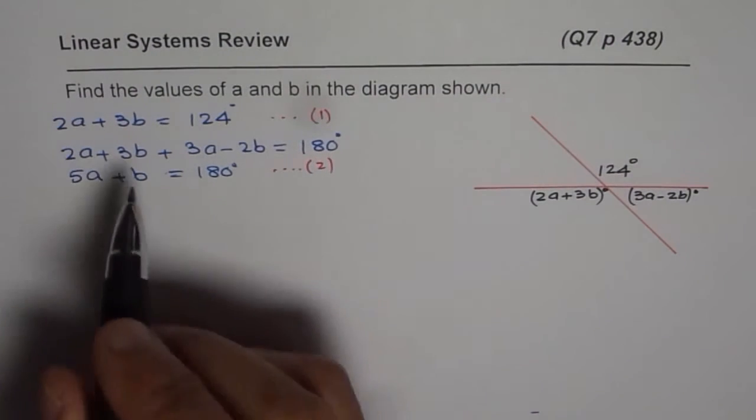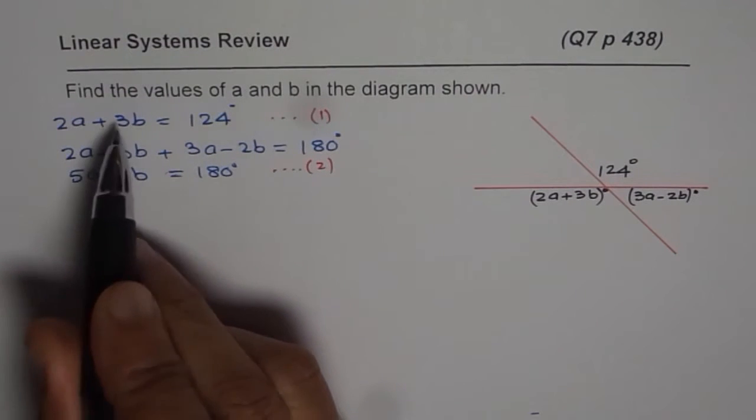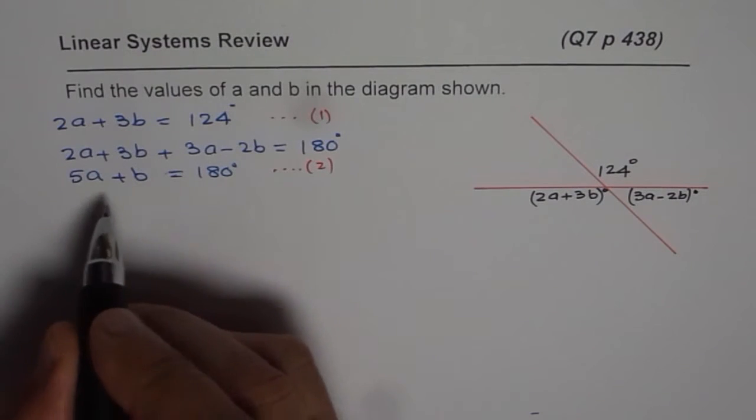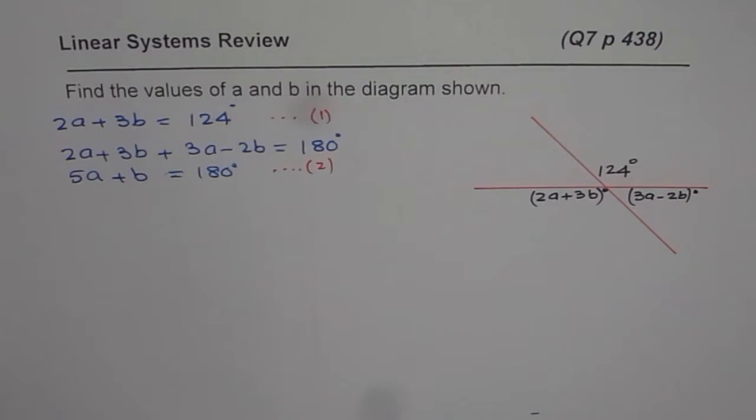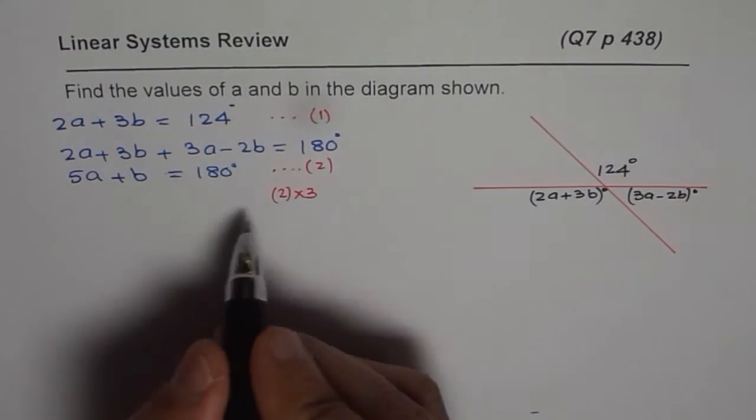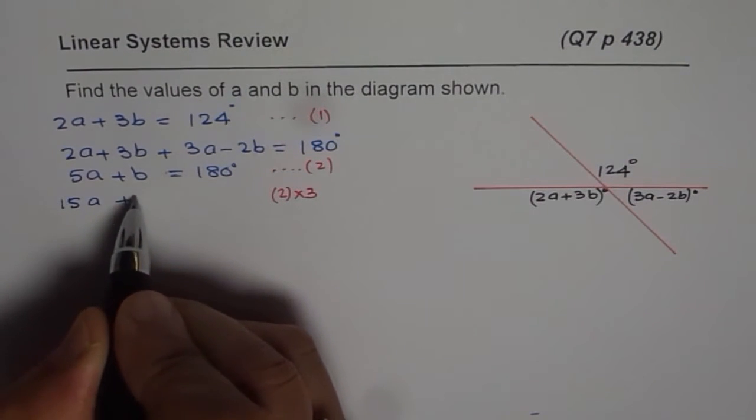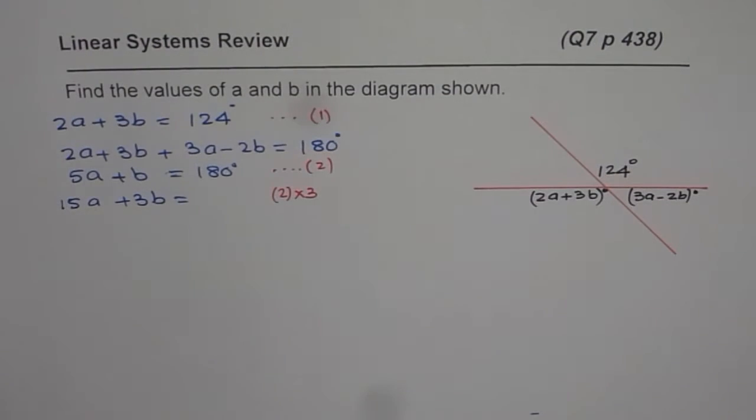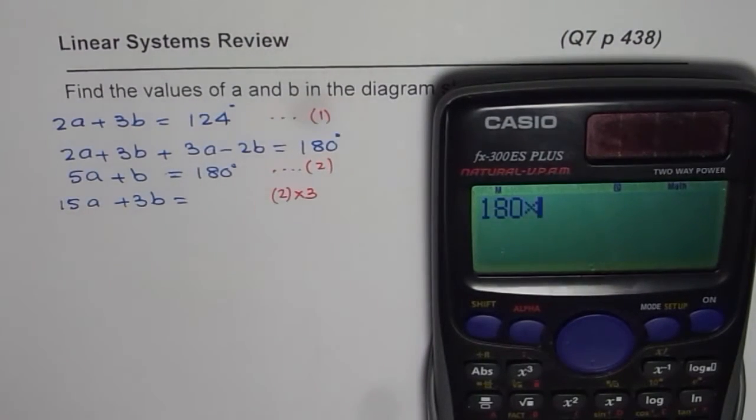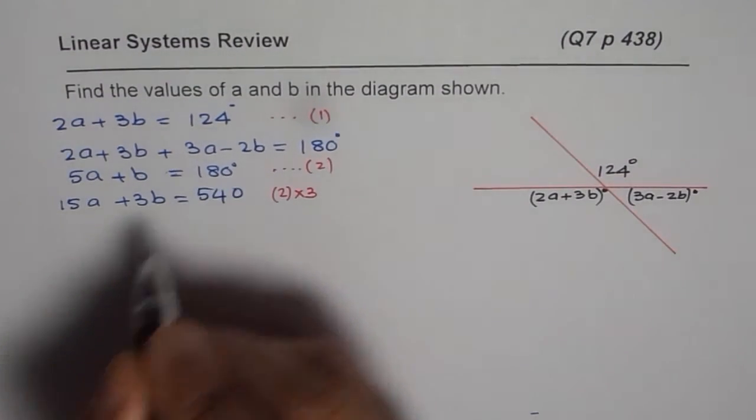Let us do elimination. We will multiply the second equation by 3. So that once we have 3B, then we can take away one from the other and then solve. So we will multiply equation 2 by 3. So we will do equation 2 times 3. So that gives us 3 times 5 is 15. So 15A plus 3B equals to 180 times 3, which is 540.